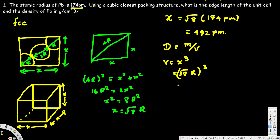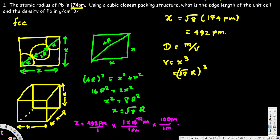Before calculating x³, let's convert x into centimeters, since we want density in g/cm³. x = 492 picometers. To convert to meters: 1 picometer = 10⁻¹² meters, so we multiply by 10⁻¹². Then to convert to centimeters: 1 meter = 100 centimeters, so multiply by 100. This gives x = 4.92 × 10⁻⁸ centimeters. This is the edge length in centimeters.